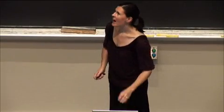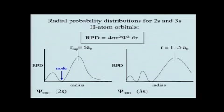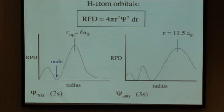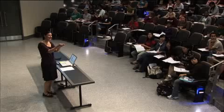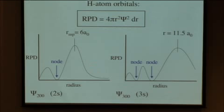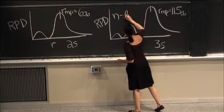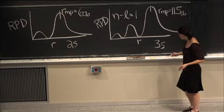Another thing to point out in these graphs is that we do have nodes. We calculated how many nodes we should have in a 2s orbital — in terms of radial nodes, we expect to see one. For the 3s orbital, how many nodes? Two. Good — no one counted the r equals zero as a node. We expect two nodes in the 3s orbital, which we calculate with the formula n minus l minus 1 equals the number of radial nodes.